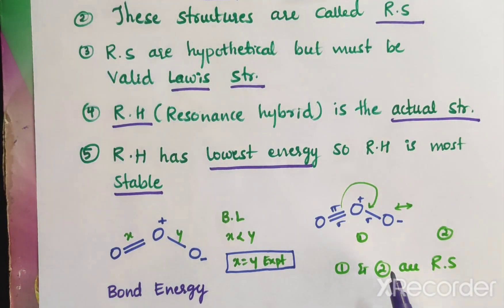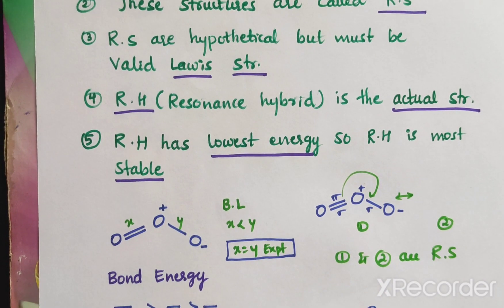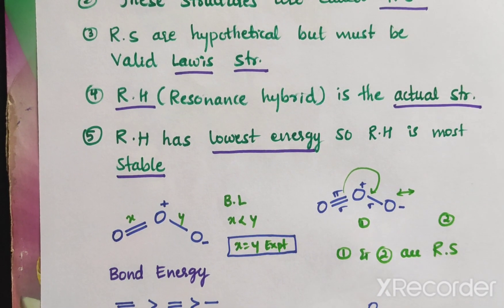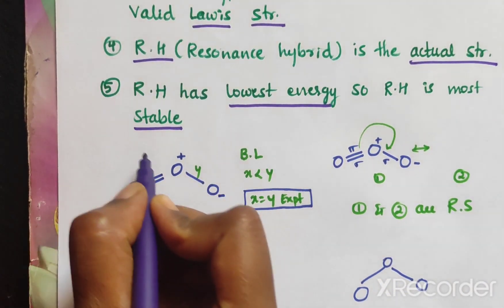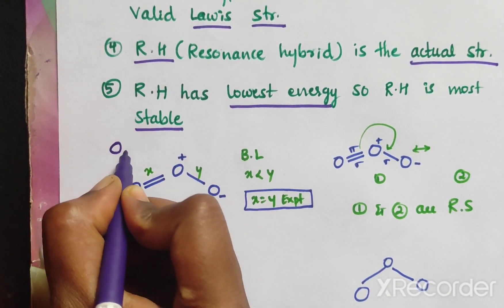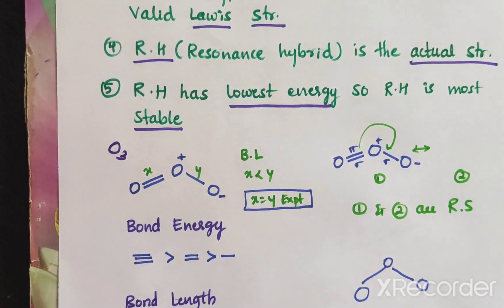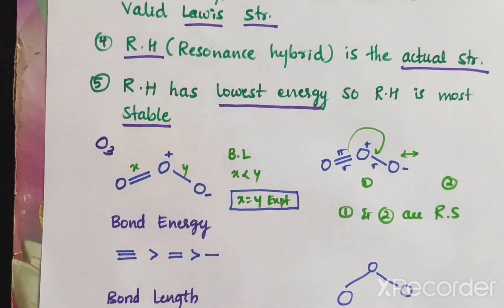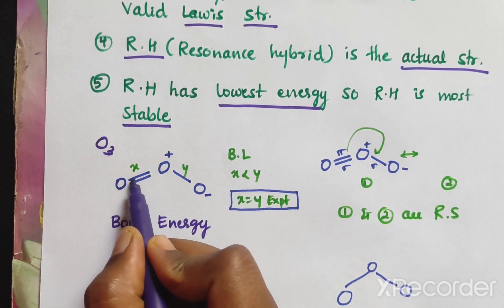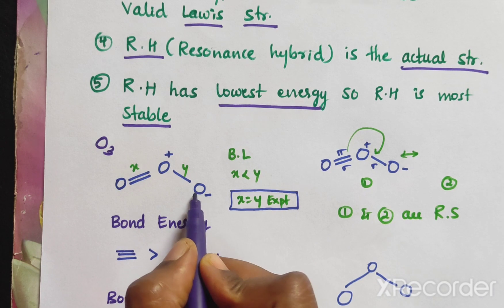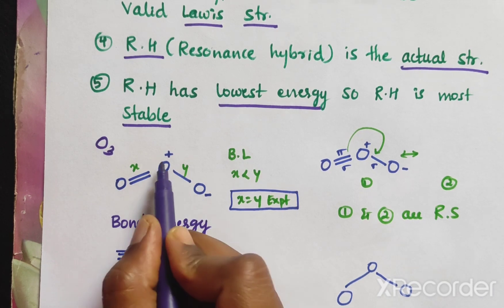We will discuss how resonance takes place with an example. This is O3, ozone. We can write it as O double bond O single bond O, with a positive charge and a negative charge.